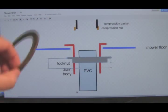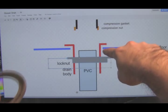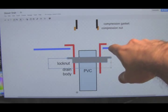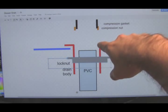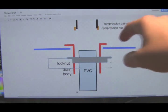There's also a rubber washer in between the lock nut and the shower floor that seals it from the bottom, and you're supposed to put plumber's putty or silicone in between the drain body and the top of the shower floor. So right in here to make the seal on the top.